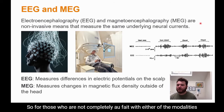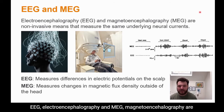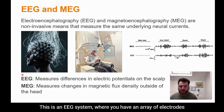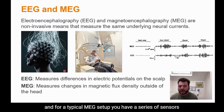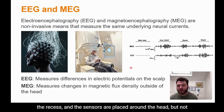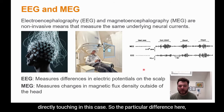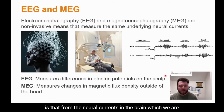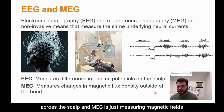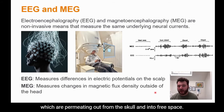EEG and MEG are measuring the same underlying neural currents in the brain. EEG uses an array of electrodes placed on the scalp, while a typical MEG setup has a series of sensors in a large cryostat where a person places their head into a recess — the sensors are placed around the head but not directly touching. The key difference is that EEG measures differences in electric potentials across the scalp, while MEG measures magnetic fields permeating out from the skull into free space.